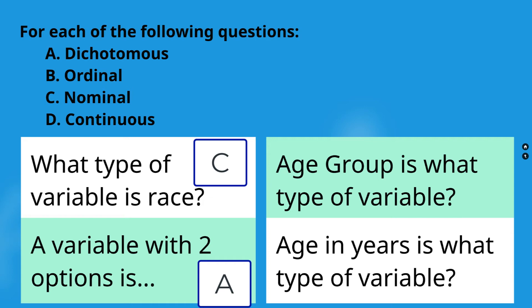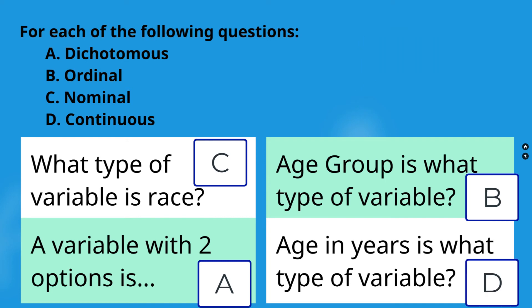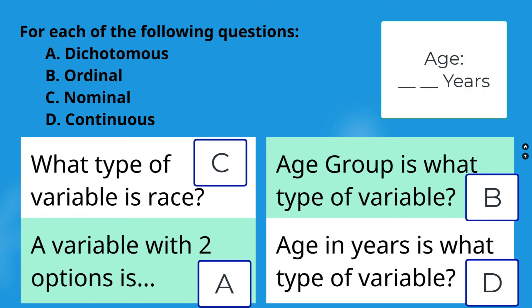A variable with two options is dichotomous — the prefix 'di' means two, so two levels. These are categorical variables, but because there are only two options, we don't distinguish between ordinal or nominal; it is simply a dichotomous categorical variable. Age group is an ordinal categorical variable — if people select less than 16, 17 to 20, 21 to 25, or 26 and higher, there is an inherent order to those options. Age in years, however, is a continuous variable — you collect the numeric response and it becomes continuous.